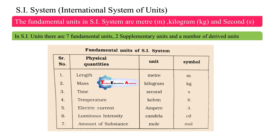Time — it is used to measure time in seconds, hours, and minutes. It is a fundamental physical quantity. Temperature means the sense of hotness or coldness of a body. Its unit is degree Celsius and Kelvin, and in the SI system its unit is Kelvin.